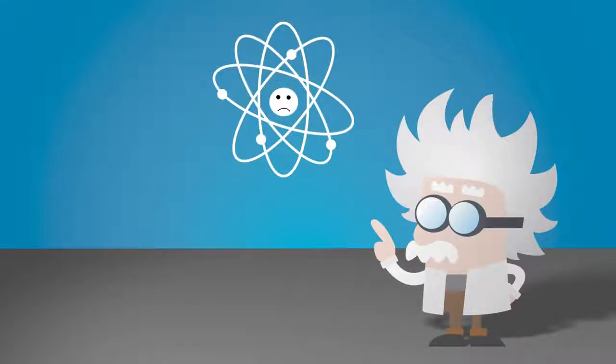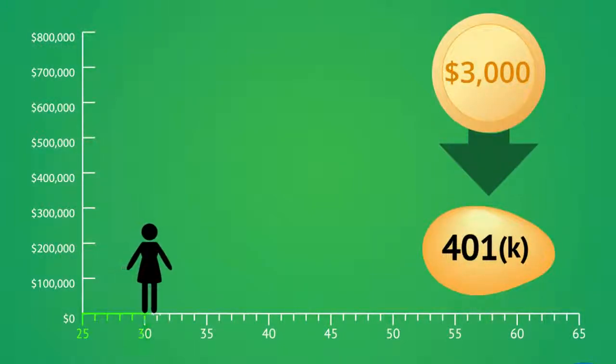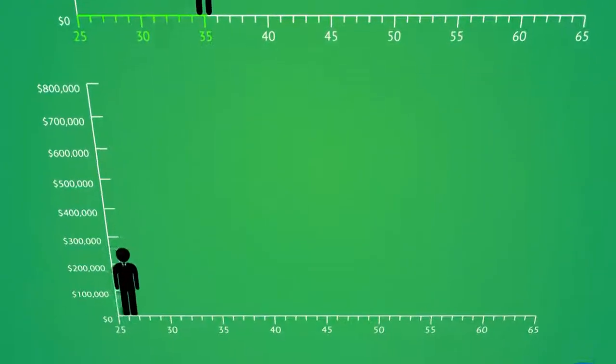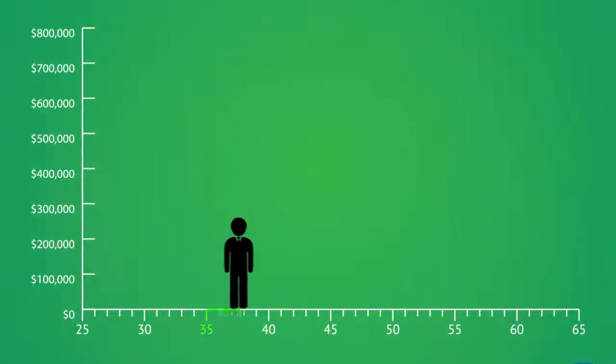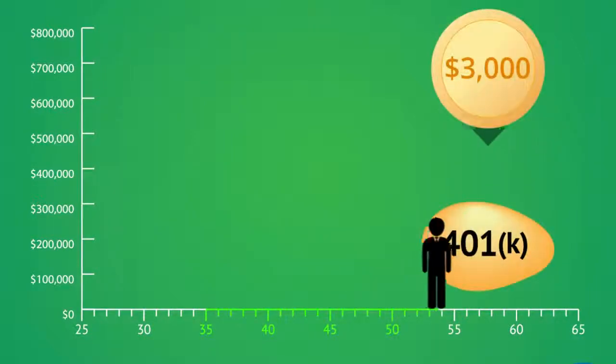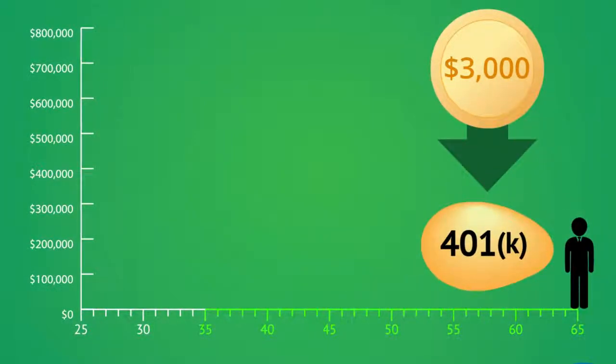Let's look at another example. When Mary is 25, she invests $3,000 each year for 10 years into her 401k, and foolishly never invests another nickel. John, who is the same age as Mary, waits until he's 35 to start investing $3,000 each year into his 401k, but does so for 30 years.